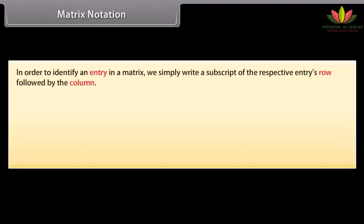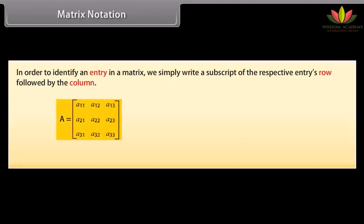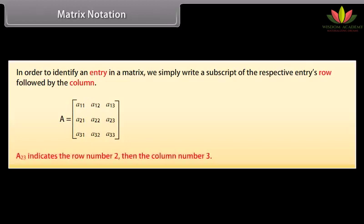Matrix notation. In order to identify an entry in a matrix, we simply write a subscript of the respective entry's row followed by the column. In matrix A, we write A₂₃ to denote the entry in the second row and the third column. A₂₃ indicates row number 2 and column number 3.